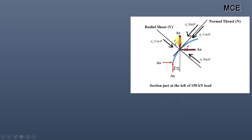After cutting the section, the forces acting on the left portion are Ax and Ay. To maintain equilibrium, equal and opposite forces act at the section. Now resolve Ax and Ay along the normal thrust and radial shear directions. The angle between the arch tangent and horizontal is θ = 35.75°, so the complementary angle is 90° − θ. The component of Ax along the normal thrust is Ax cos θ, the component of Ay along the normal thrust is Ay sin θ, the component of Ay along the radial shear is Ay cos θ, and the component of Ax along the radial shear is Ax sin θ.